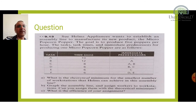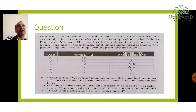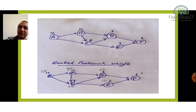Task B takes 12 minutes and its immediate predecessor is A, so B can start only after completing A. Task C has a time of 8 minutes and its immediate predecessors are A and B. From this you can prepare a precedence graph. The questions to answer are: what is the theoretical minimum number of workstations, how to graph the assembly and assign workers, and what is the efficiency.